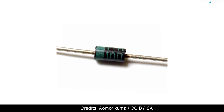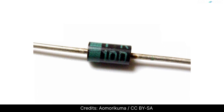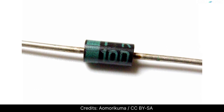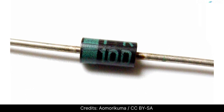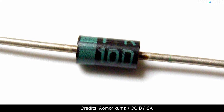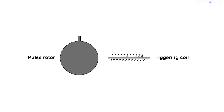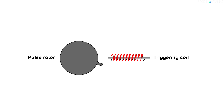Then there is a diode — a semiconductor device which allows current to flow only in one direction. We also have a triggering unit consisting of a pulse rotor and a triggering coil. When the magnet in the rotor comes near the coil, the coil gets excited. This in turn sends a triggering signal to the silicon-controlled rectifier.